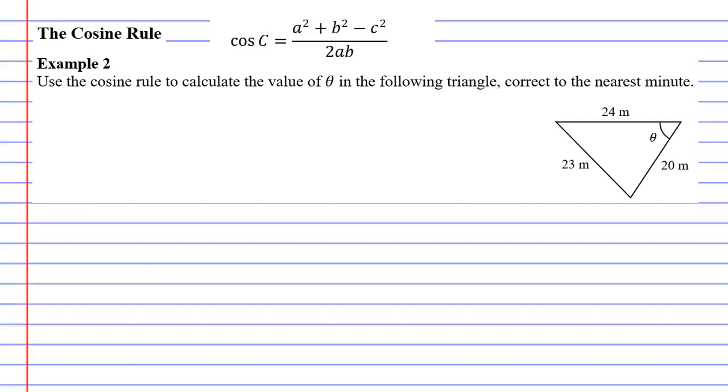In this video we're going to complete example 2. It says use the cosine rule to calculate the value of theta in the following triangle correct to the nearest minute.